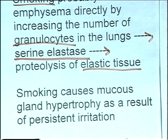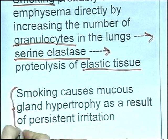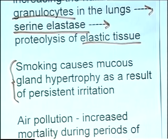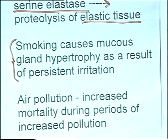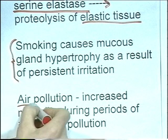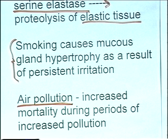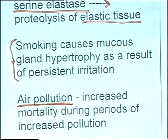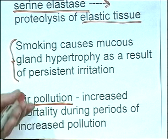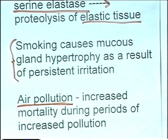Smoking also causes mucus gland hypertrophy as a result of persistent irritation, but that's more a feature of bronchitis rather than emphysema. This results in chronic high levels of viscous mucus in people with chronic obstructive airways disease. And air pollution - in many cities where the incidence of bronchitis and emphysema is increasing, the air pollution is particularly bad. There is an increased mortality during periods of increased pollution, for example in smogs.